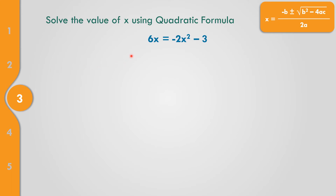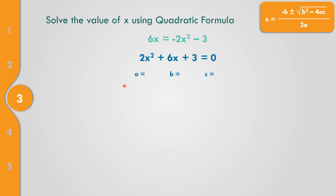Example number 3: 6x equals negative 2x squared minus 3. First, we need to rewrite this in standard form. Put the right side on the left: changing the sign gives positive 2x squared, bring down 6x, and negative 3 moving to the left becomes positive 3, equals 0. Arranged from highest to lowest exponent. The value of A is 2, the value of B is 6, and the constant C equals 3.